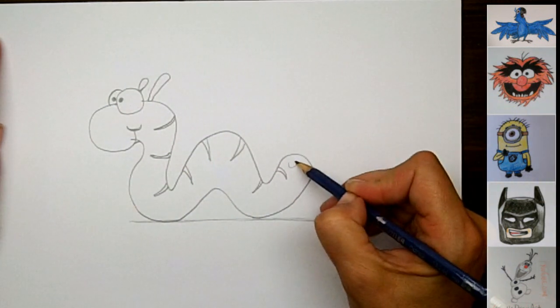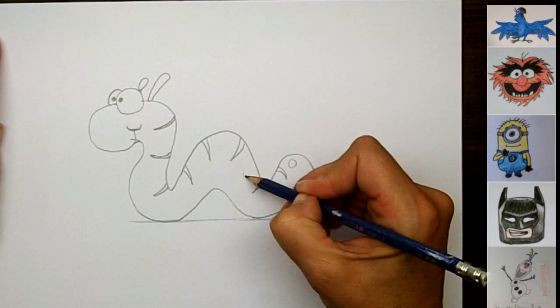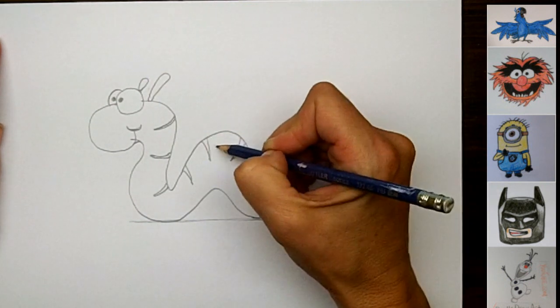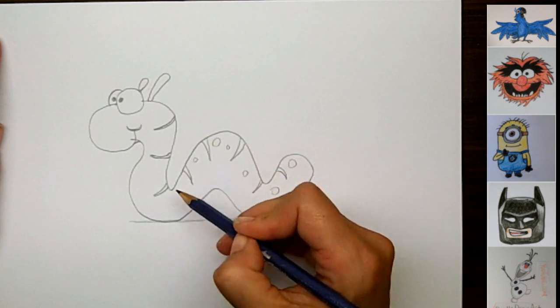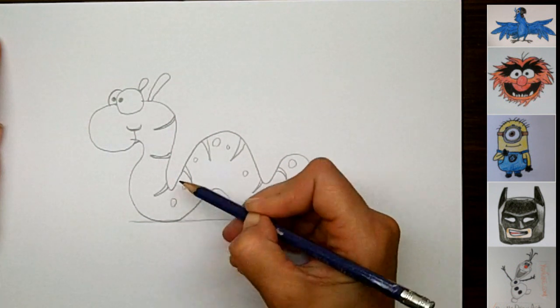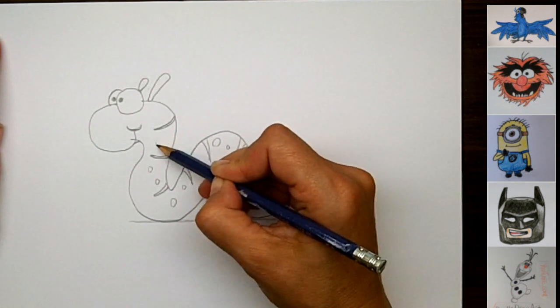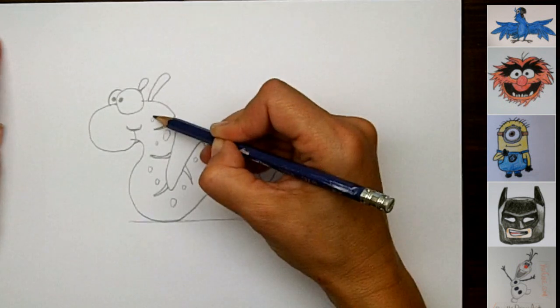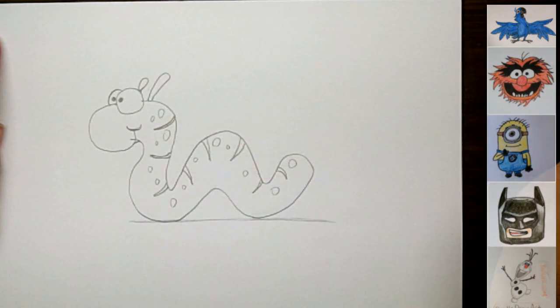And maybe he even has some spots as well. So you could draw some little circles all over his body here. Little circles, bigger circles, kind of like tiger stripes.